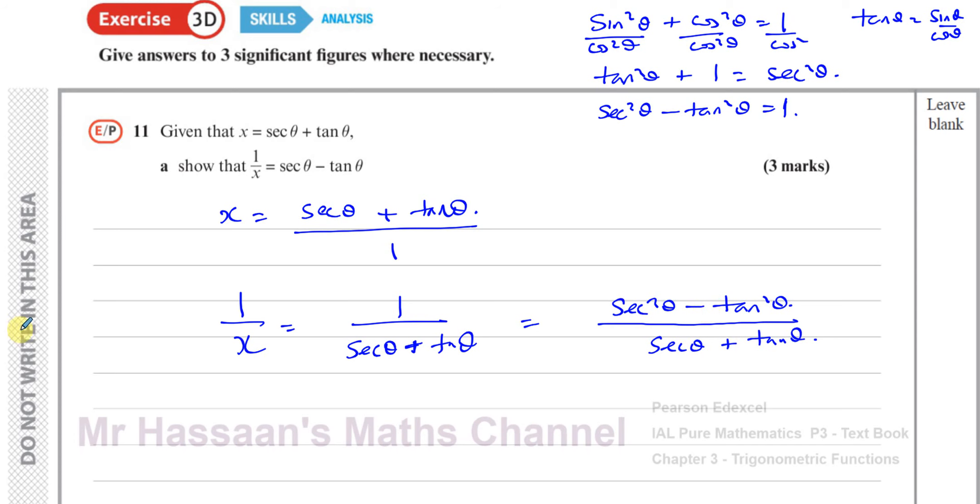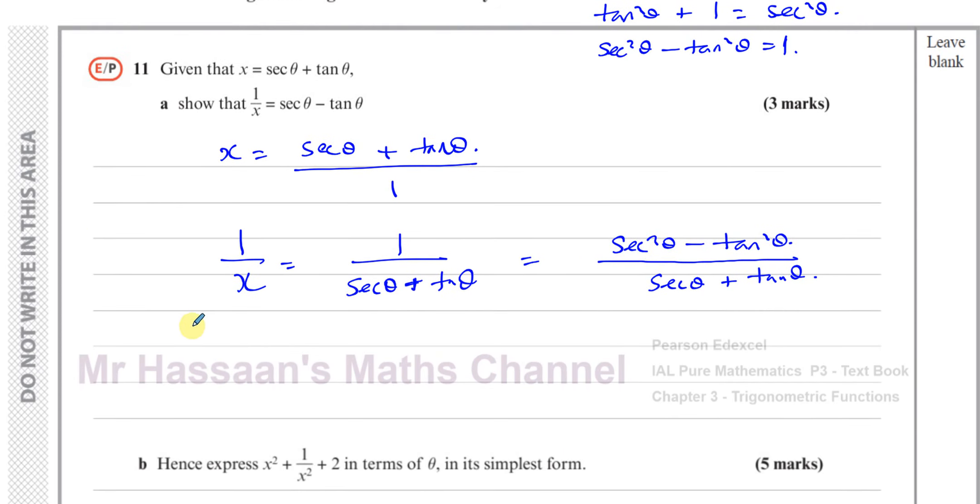What we have here is a difference of squares. We can rewrite this as secant θ plus tan θ times secant θ minus tan θ, all divided by secant θ plus tan θ. Now we have a common factor of secant θ plus tan θ which cancels out, and that leaves us with the thing that we have to prove, secant θ minus tan θ. So we started off with secant θ plus tan θ and we proved that 1 over that is equal to secant θ minus tan θ.